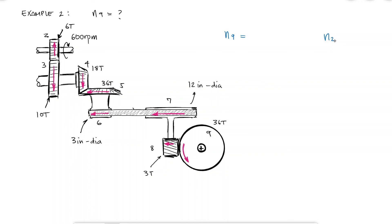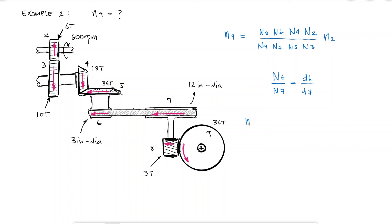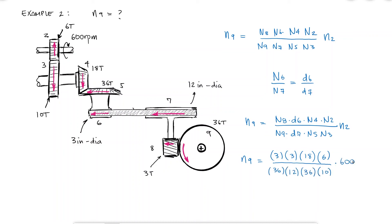To find the speed value of gear 9 as a function of the speed of gear 2, and by remembering that lowercase 2 goes together with capital N2, I identified that gear 2 is a driving gear, and so are 4, 6, and 8. The gears being driven would be 3, 5, 7, and 9. Since elements 6 and 7 are not really gears, I would not be able to use information about their number of teeth. However, since the ratio of number of teeth is the same as the ratio between the diameters, I can rewrite the expression in terms of diameters for 6 and 7 to find that the speed of gear 9 is 3.75 RPMs in the counterclockwise direction.